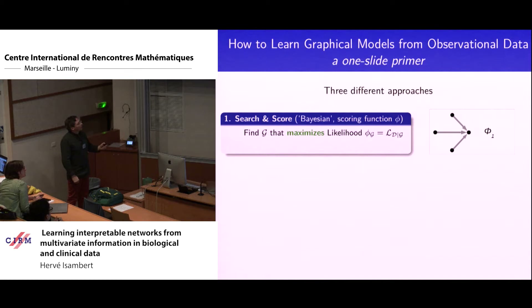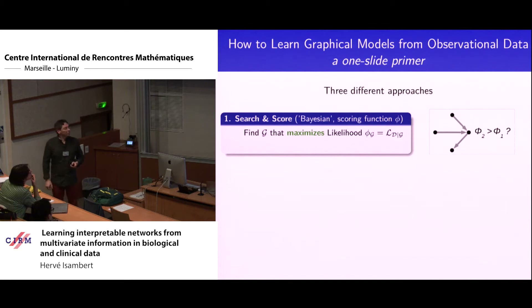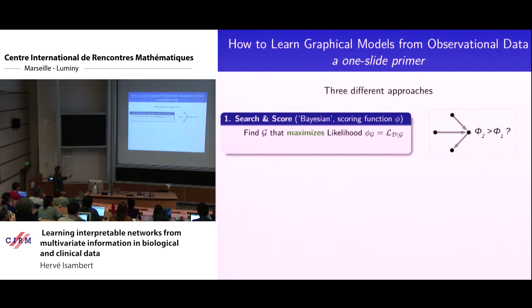If the second graph has a higher score, it's more likely. In principle, you try all networks and pick the one or few with the maximum score. It's a nice method that actually works very well. Although the main issue is that as soon as you have more than ten or so nodes, you can't really enumerate all of them, so you have to resort to heuristics. These heuristics have been developed and work quite nicely.